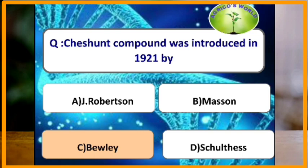Chestnut compound was introduced in the year 1921 by which scientist? The composition of chestnut compound is two parts of copper sulfate with 11 parts of ammonium carbonate, and it was introduced by the scientist Bule.